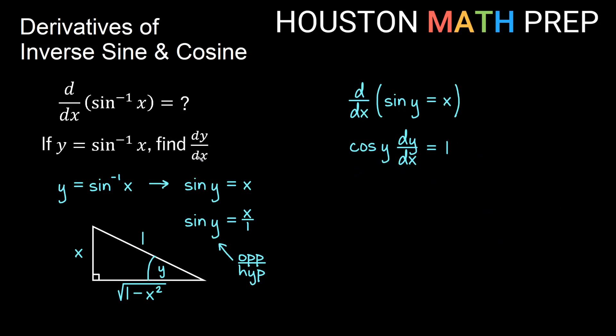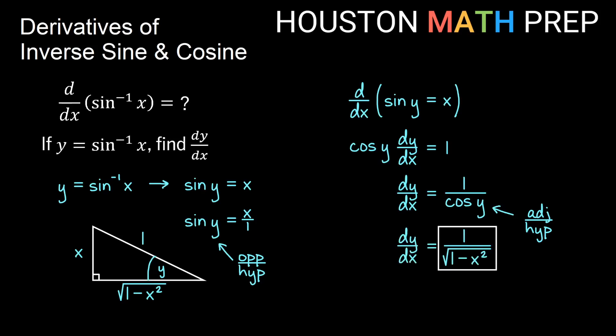If we want to solve for dy/dx, we divide both sides by cosine y, giving us dy/dx equals 1 over cosine y. Our original function was in terms of x, so we go back to our right triangle. Cosine y is the adjacent side over the hypotenuse — the adjacent side is the square root of 1 minus x squared and the hypotenuse is 1 — so we get the formula dy/dx equals 1 over the square root of 1 minus x squared.